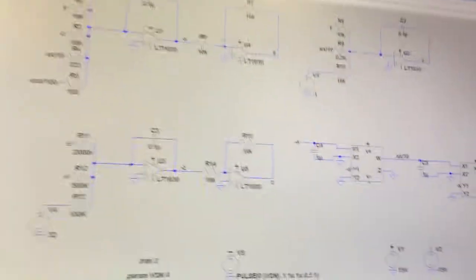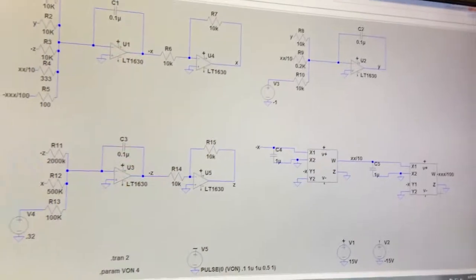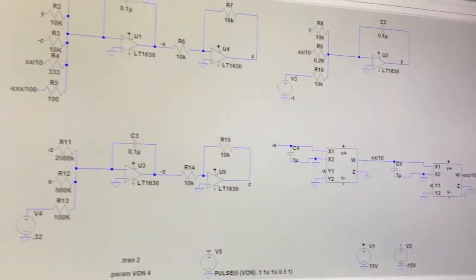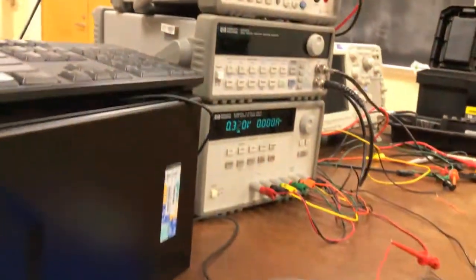Now, going from LT SPICE schematic to actual breadboard circuitry, we have here our four different ICs.